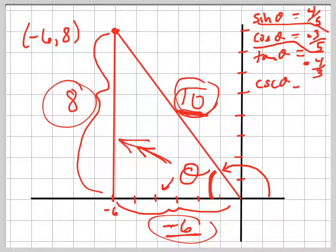So the cosecant is the reciprocal of the sine, so it's just 5 fourths. The secant is the reciprocal of the cosine, so it's negative 5 thirds. And the cotangent is the reciprocal of the tangent, so it's negative 3 fourths.